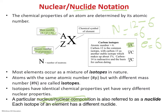What about carbon-13 and carbon-14? These are isotopes of carbon. Most elements occur as a mixture of isotopes in nature. Isotopes are atoms with the same atomic number — meaning the same number of protons — but different mass numbers, which means they have different numbers of neutrons. Isotopes have identical chemical properties because their atomic number is the same, but they have very different nuclear properties.